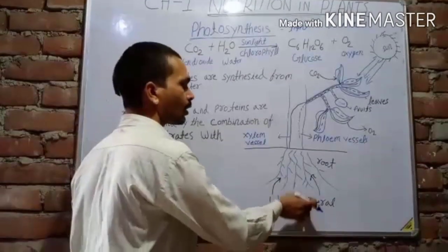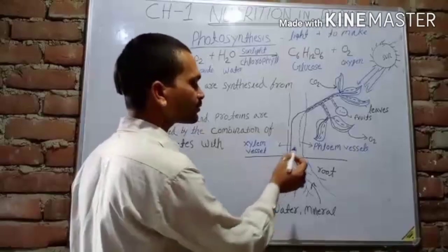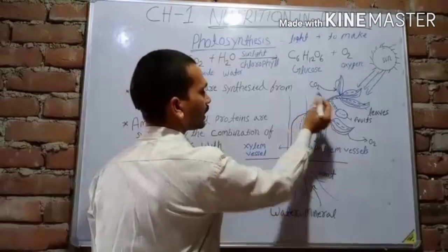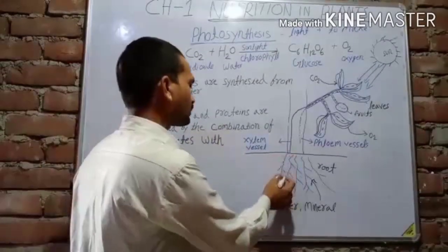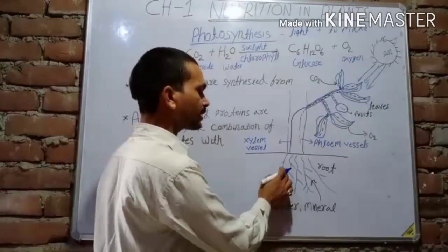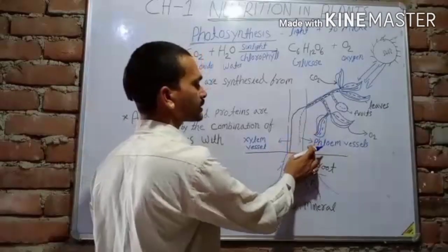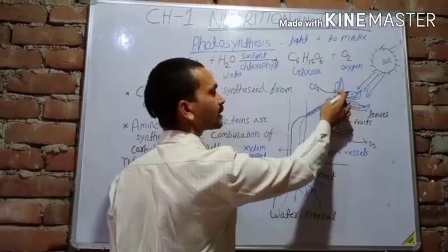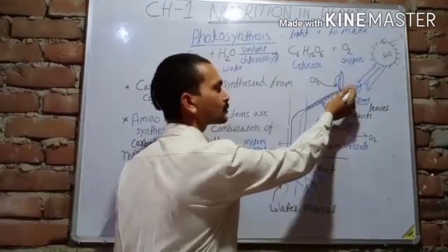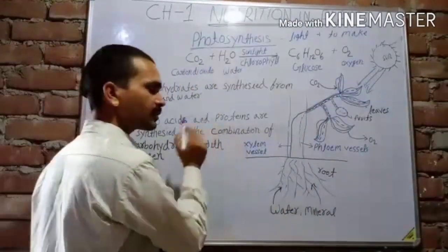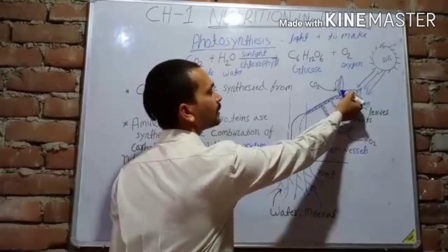In this process, there are two vessels in a plant. The first is the xylem vessel and the second is the phloem vessel. The xylem vessel is indicated by a black line and the phloem vessel is indicated by a dotted black line. The xylem vessel is the passage for water and minerals from the soil to the leaves. The phloem vessel takes the prepared food from the leaves and transfers it to the different parts of the plant.